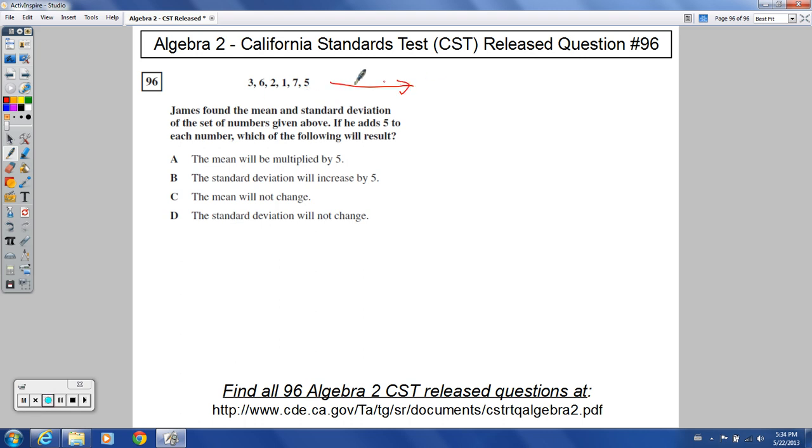So that list, the new list, would look like this: 8, that's just 3 plus 5. 6 plus 5 is 11. We'd have 7, 6, 12, and 10. So there's our new list of numbers.